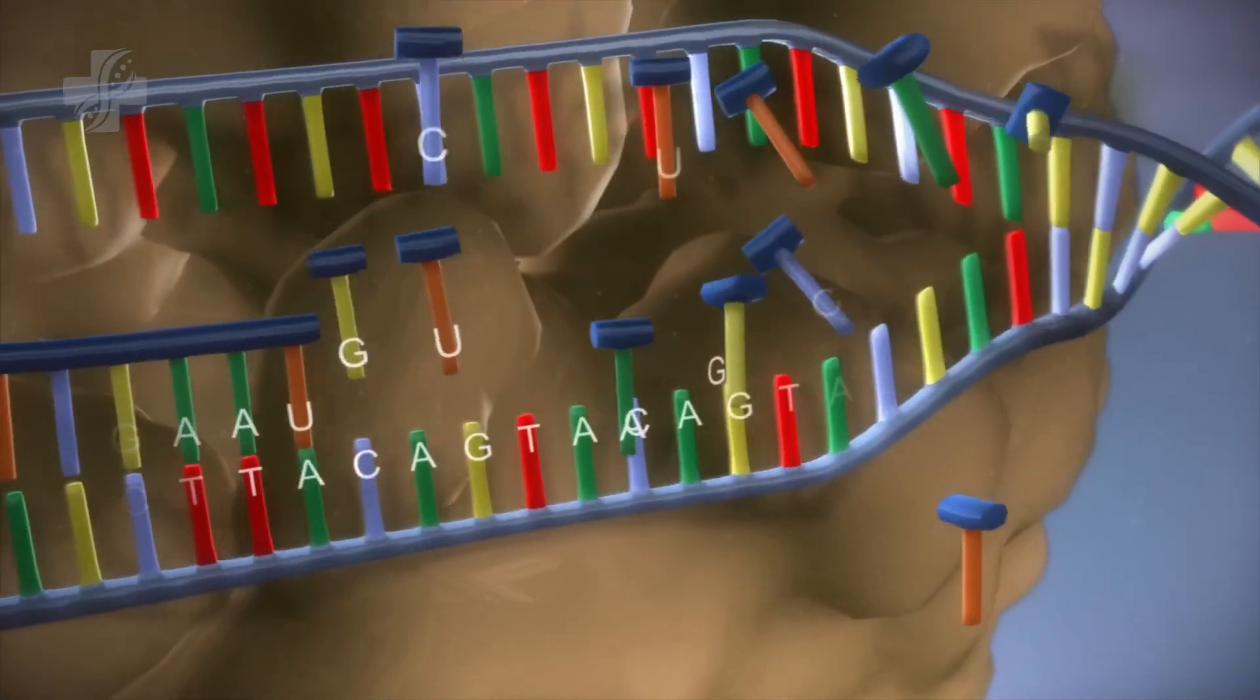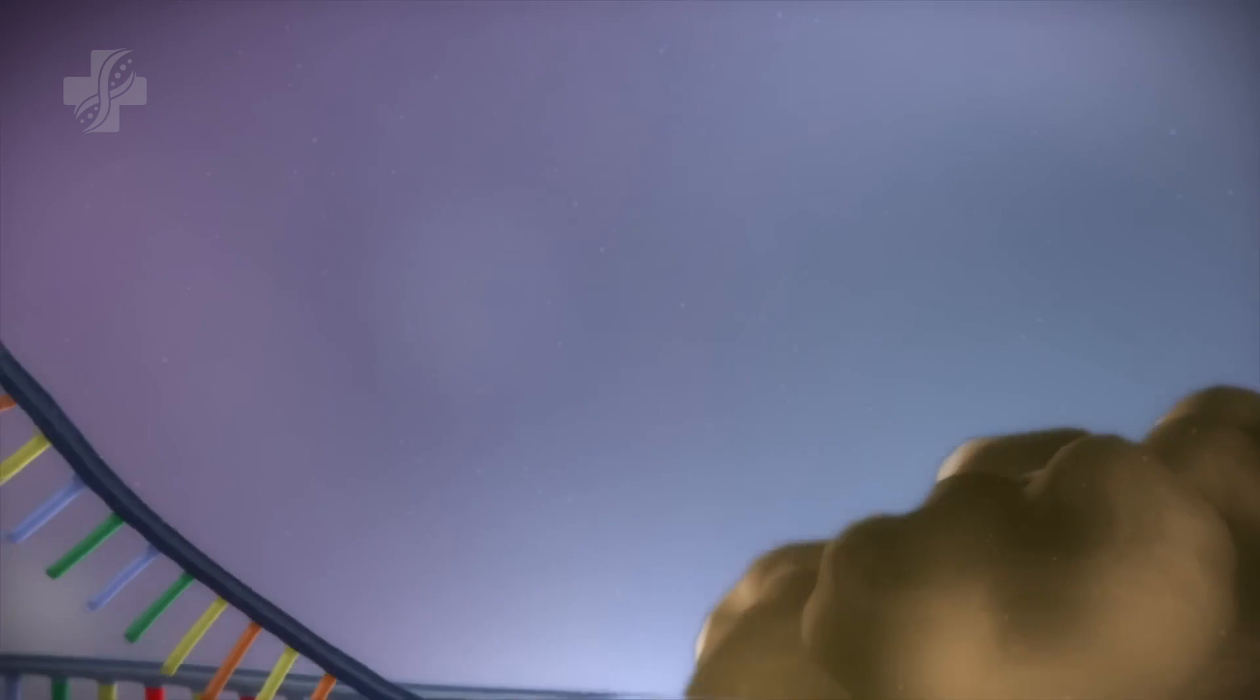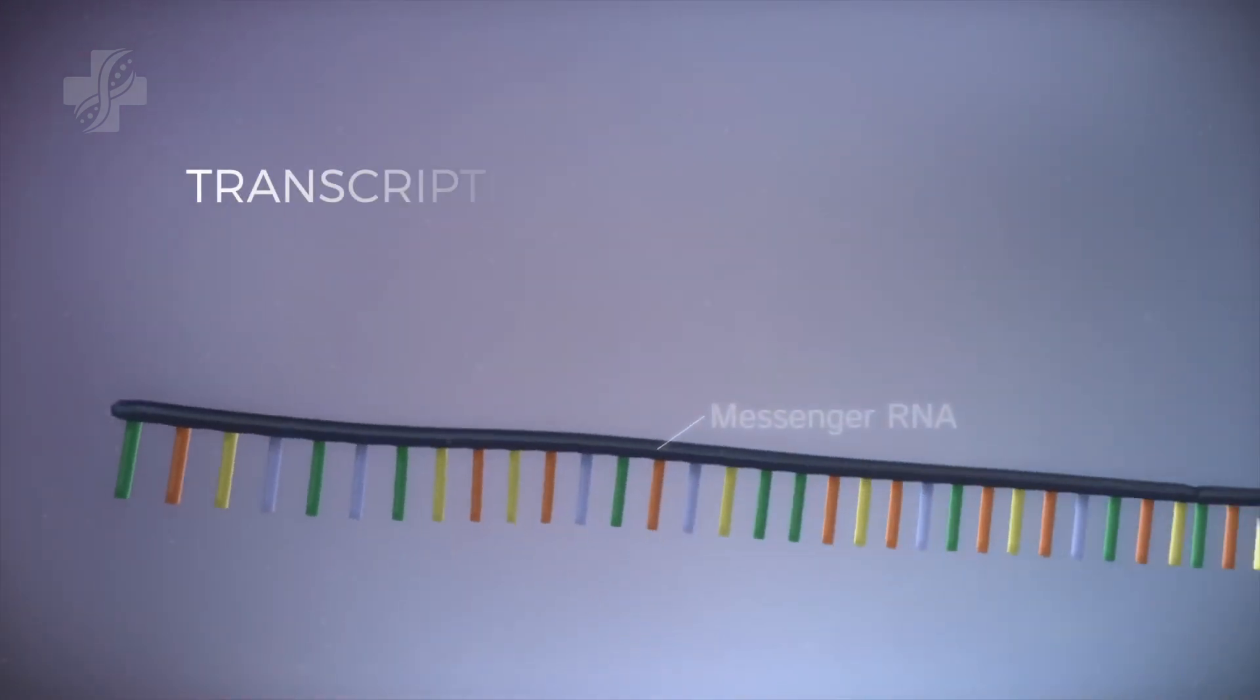The DNA code determines the order in which the free bases are added. This process is called transcription.